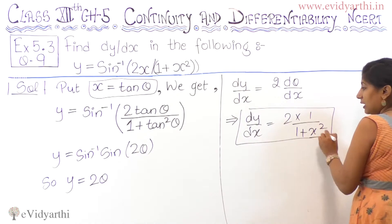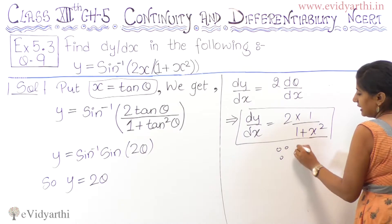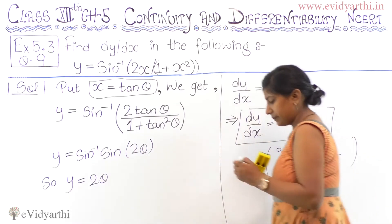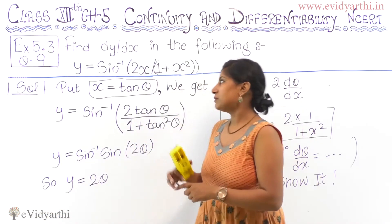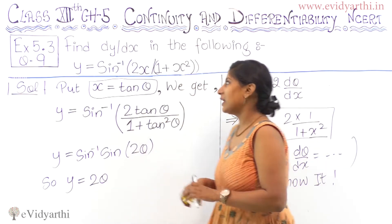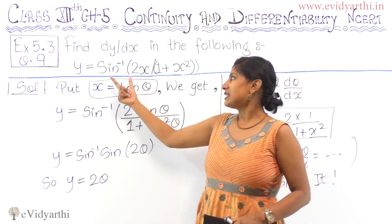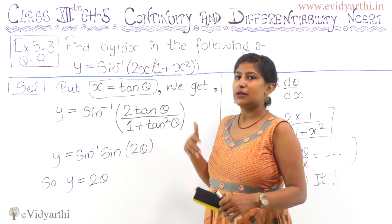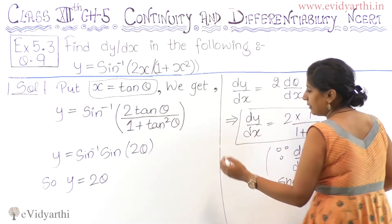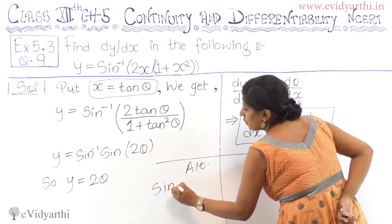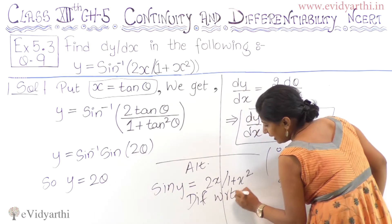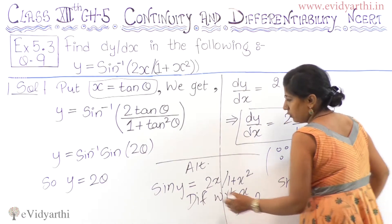Alternatively, since θ = tan⁻¹x, we can directly write dθ/dx = 1/(1 + x²). There is also a third method: from sin⁻¹(2x/(1+x²)) = y, we write sin y = 2x/(1+x²) and differentiate both sides with respect to x, solving for dy/dx. That is our third method.